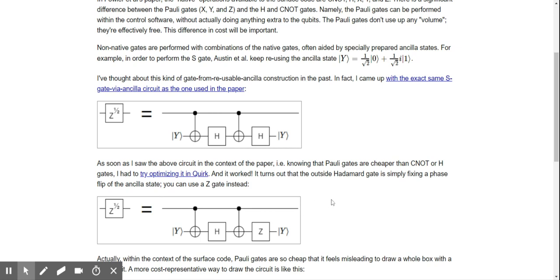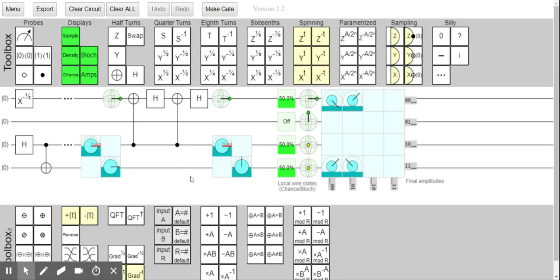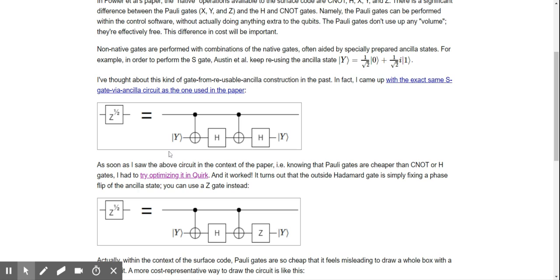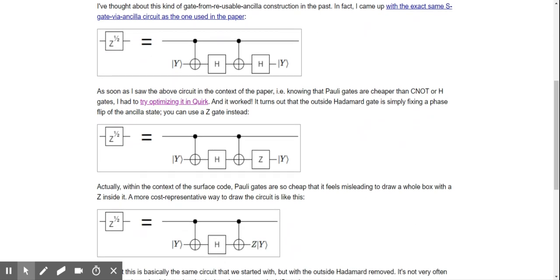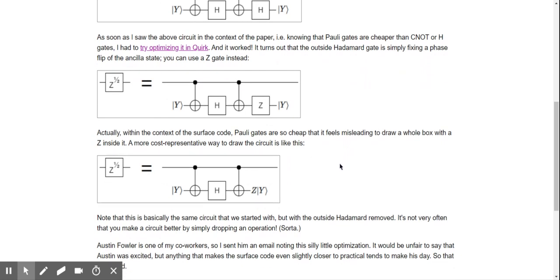Knowing the Pauli gates are cheaper than CNOT and Hadamard gates, I had to try optimizing it. It worked. It turns out that the outside Hadamard gate is simply fixing a phase flip of the ancilla state. You can use the Z gate instead.